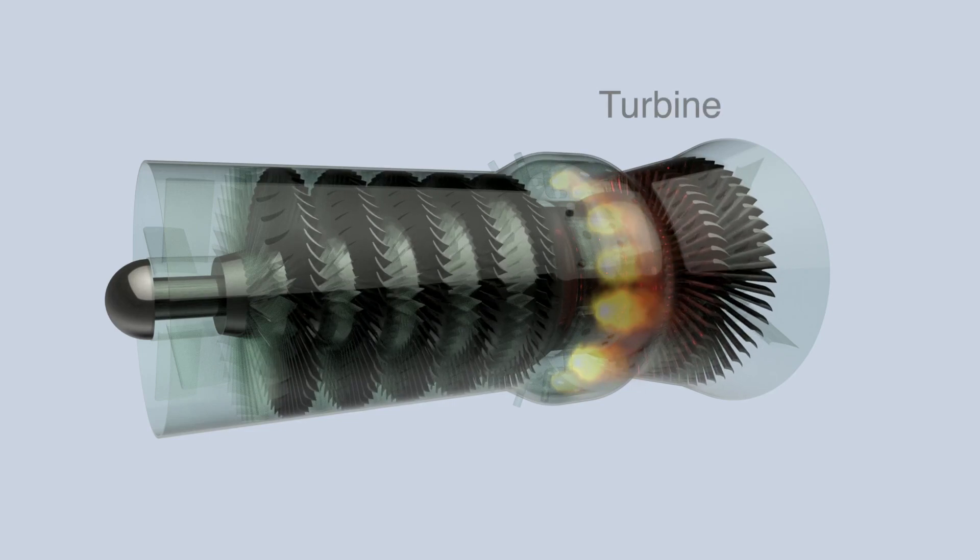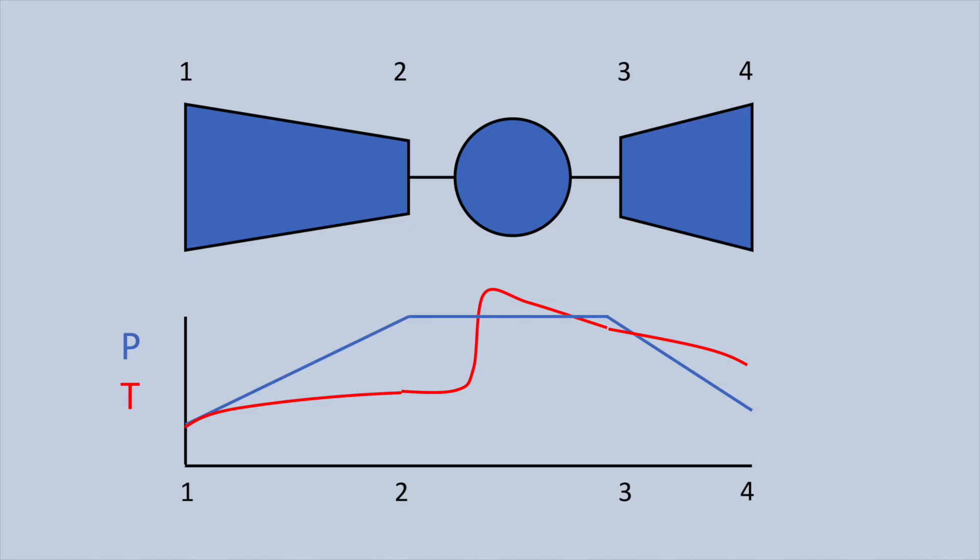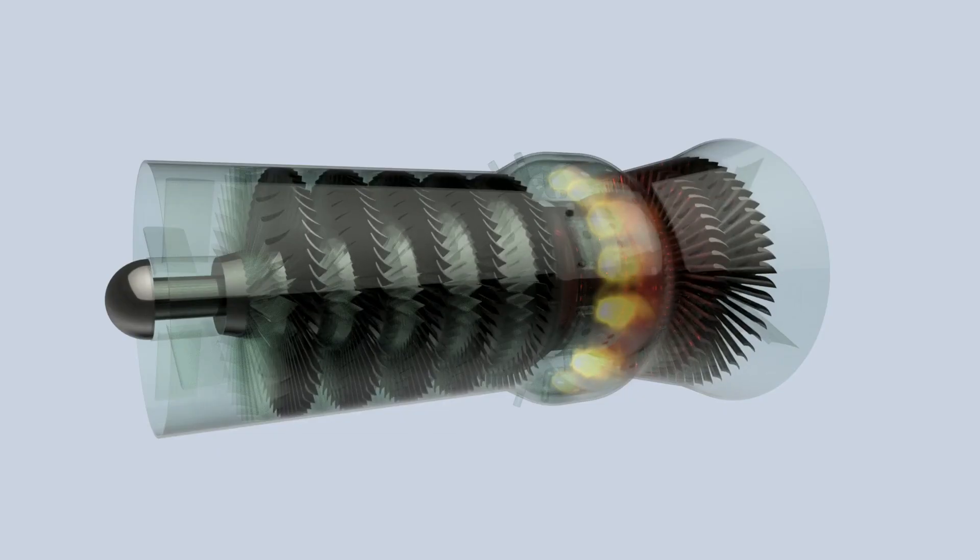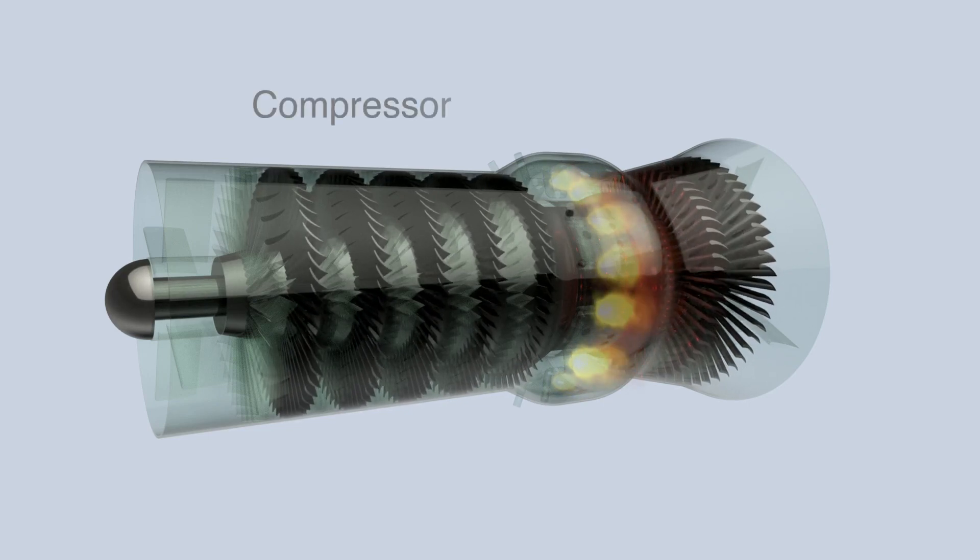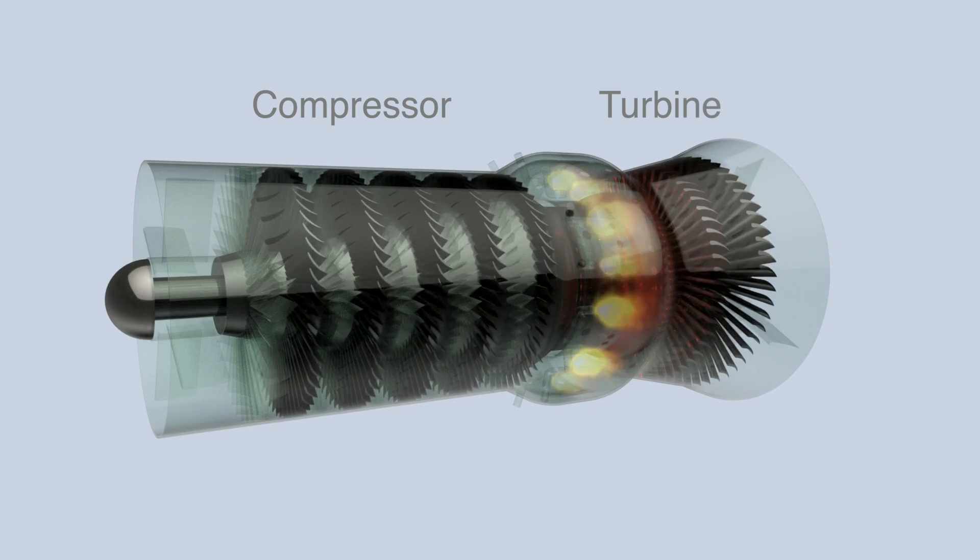The exhaust gases then enter the turbine where they are expanded and work is extracted to drive the compressor and any other work which is necessary to be driven by the engine. Essentially, the gas turbine works because less power is needed to compress cold air than can be extracted from expanding hot air.